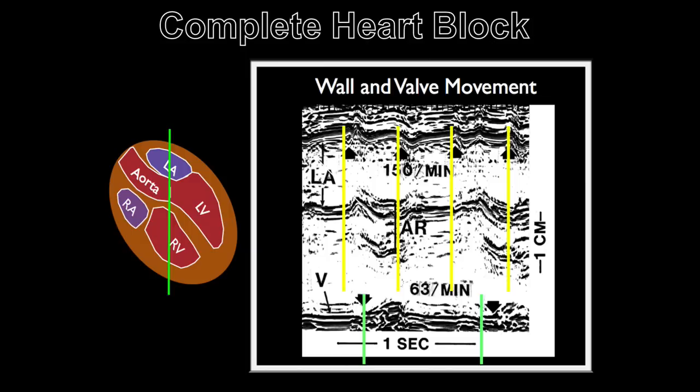This is an M-mode recording through the atrial and ventricular walls demonstrating two distinct rates independent of each other. In this example, the ventricular rate demonstrated by the green lines is 63 beats per minute, and the atrial rate demonstrated by the yellow lines is 150 beats per minute.